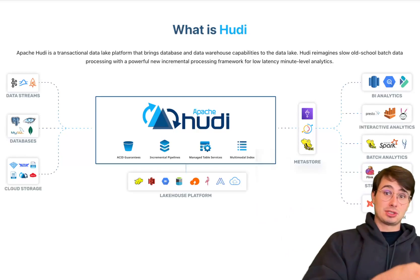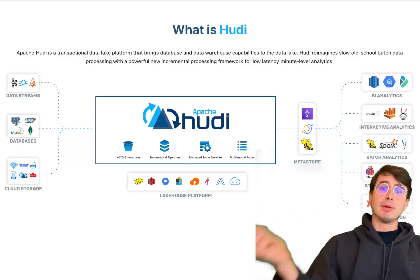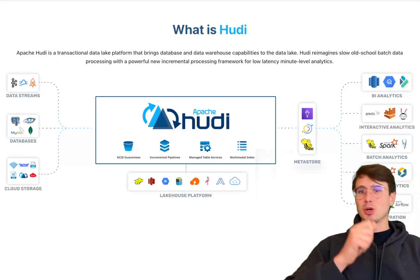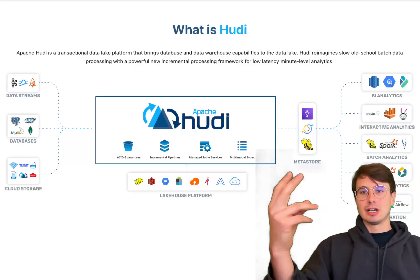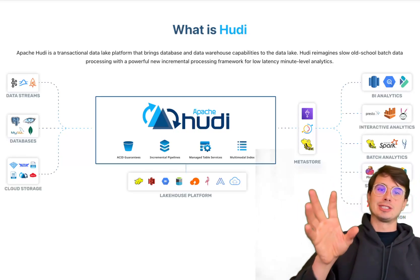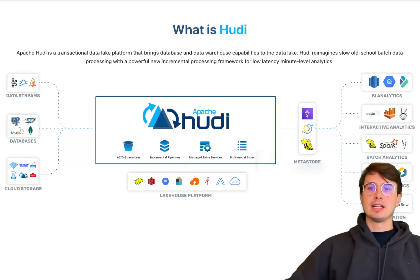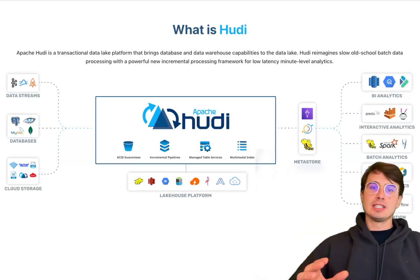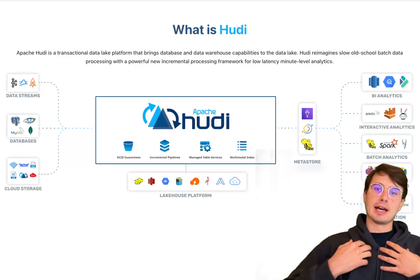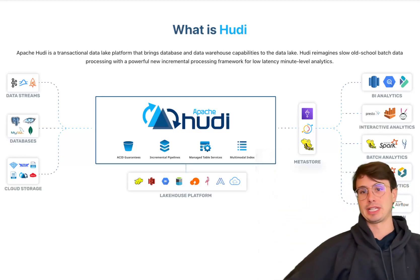Copy-on-write tables store the latest version of records, with each update creating a new file, while merge-on-read tables maintain both the base file and the delta logs recording what changes have occurred. That offers a balance between query performance and data freshness. So you actually have two table types included within Apache Hudi that are combined to really optimize it for being able to constantly update and then read from an updated table over time.